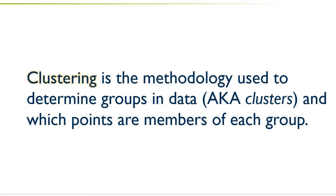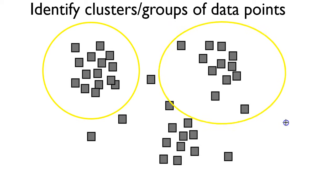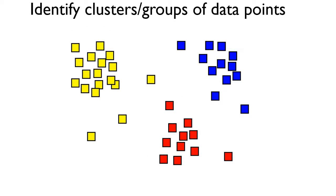By definition, clustering is the methodology used to determine groups in data — those are what we call the clusters — and which points are members of each group. As we can see in this illustration, we have a bunch of data points and you can see that we can kind of clearly draw ovals around different clusters of data. Essentially this is what we're going to be trying to do with Tableau: mapping different crimes onto the City of Austin map to see if we can identify areas where clusters of a specific type of crime take place.